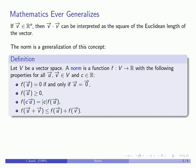Finally, we have the triangle inequality. The norm of a sum of two vectors must be less than or equal to the sum of the norms of the vectors.